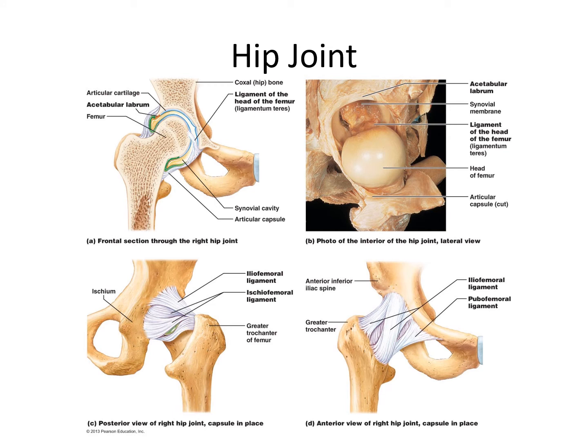This is a nice lateral view of a partially dissected interior of the hip joint — this would be the head of the femur. One structure not really visible on our model is the ligamentum teres. Looking from the outside, we have a posterior view with the iliofemoral ligament. Break down these words: ilio refers to the ilium — the largest, most superior bone of the pelvic girdle — and femoral refers to the femur, so this is a ligament attaching the ilium to the femur. In the anterior view, we see the iliofemoral ligament as well as the pubofemoral ligament, which spans from the pubis to the femur.